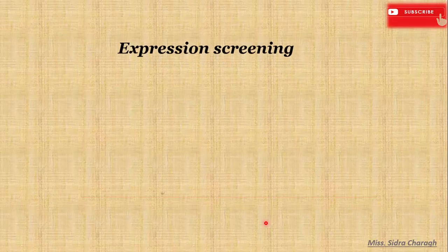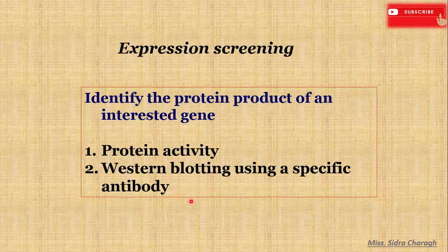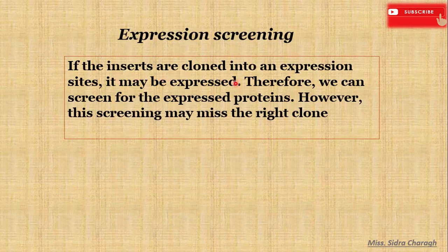Next is expression screening. In expression screening, we identify the protein product of an interested gene. Expression screening is carried out by checking protein activity and western blotting using a specific antibody. If the gene of interest is cloned into an expression site, it may be expressed and therefore we can screen for the expressed proteins. However, this screening may miss the right clone.